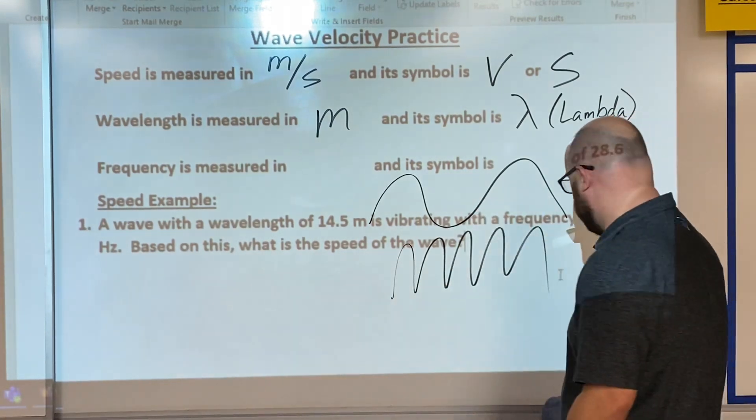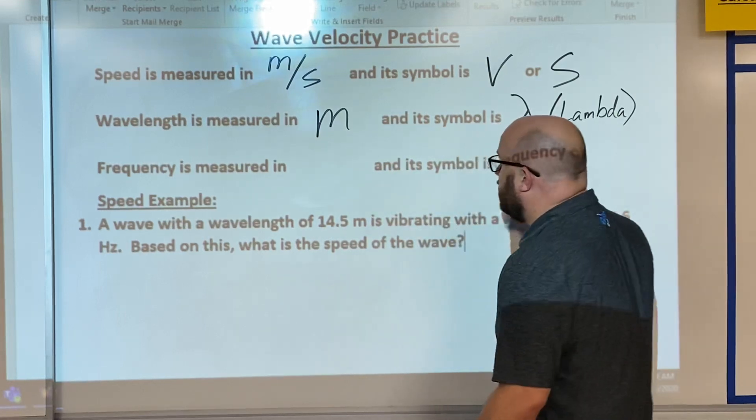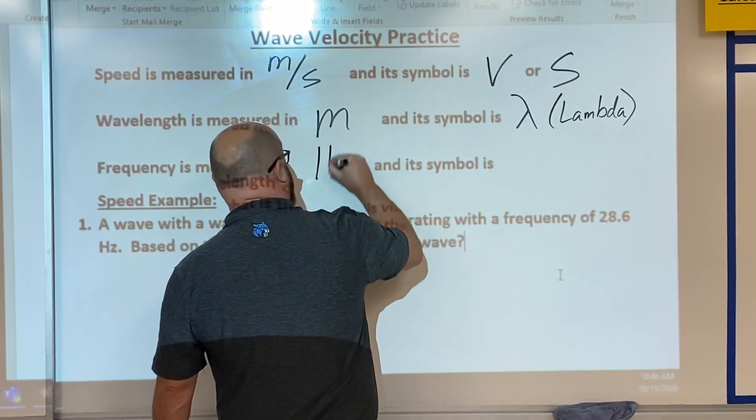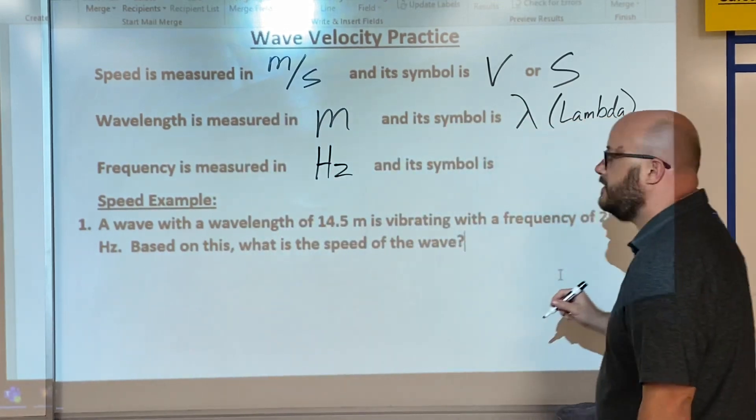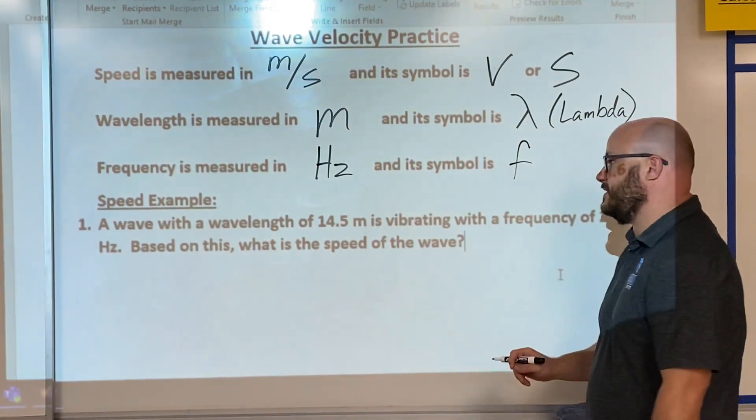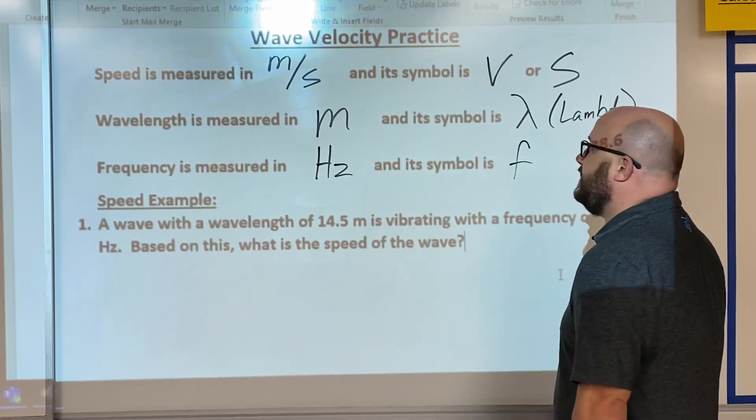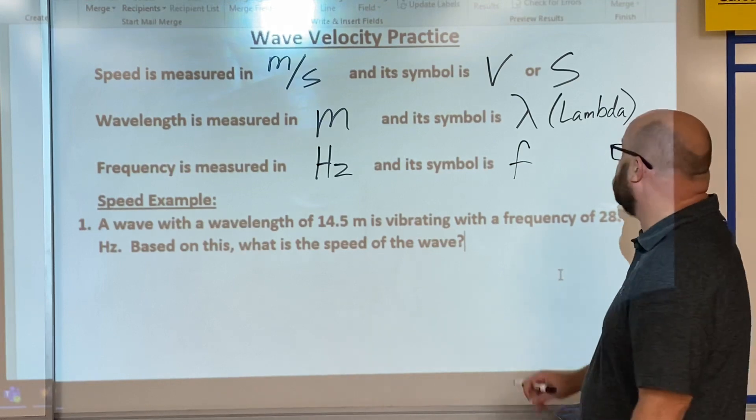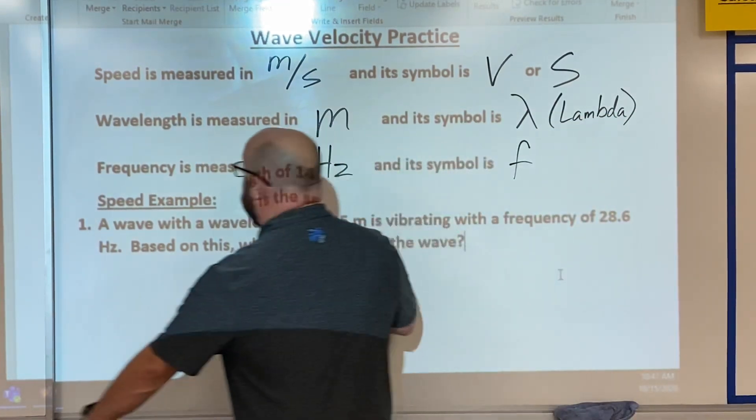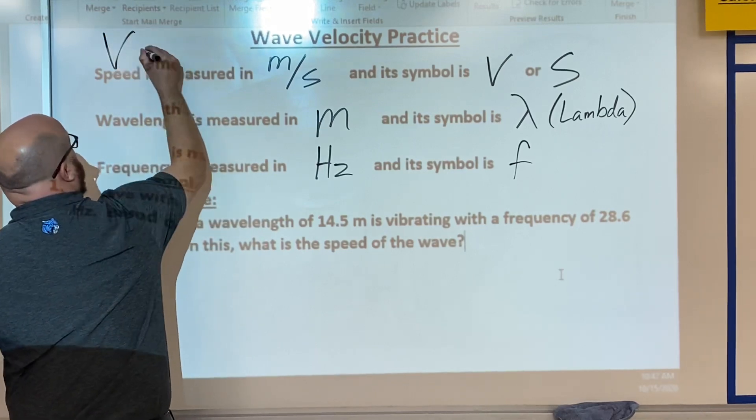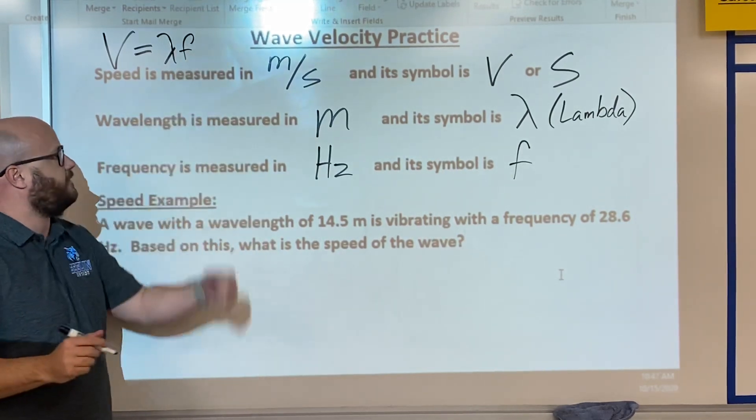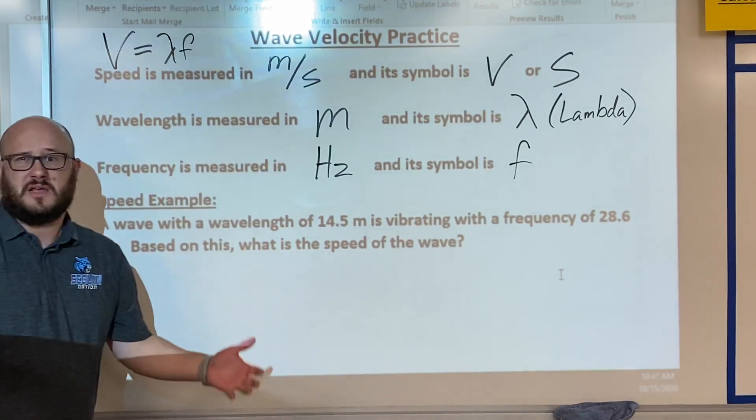Frequency we measure after the guy who founded it named Heinrich Hertz, but we abbreviate that Hz, and its symbol is just simply lowercase f. Now that we know each unit and what each symbol represents, let's write down the formula for finding a wave's speed or velocity.